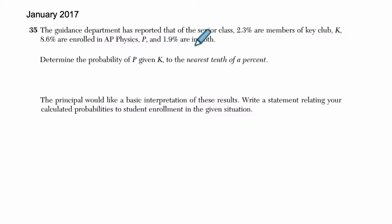The guidance department has reported that of the senior class, 2.3% are members of the key club K. So they're telling us that K is the variable for being in the key club. I'm going to write this down. The probability that a student is in the key club equals 2.3%, which is 0.023 as a decimal.